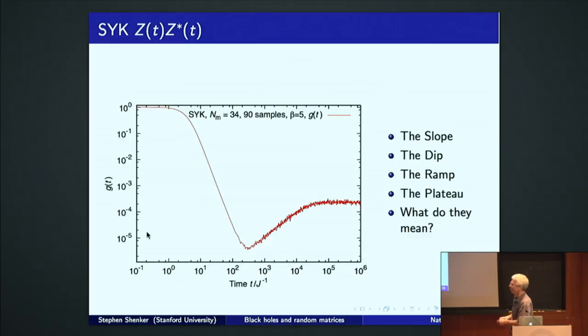We call this the dip. I guess that's a pretty natural reason. This is the ramp. And this is the plateau. Well, these are the names. What are these things?